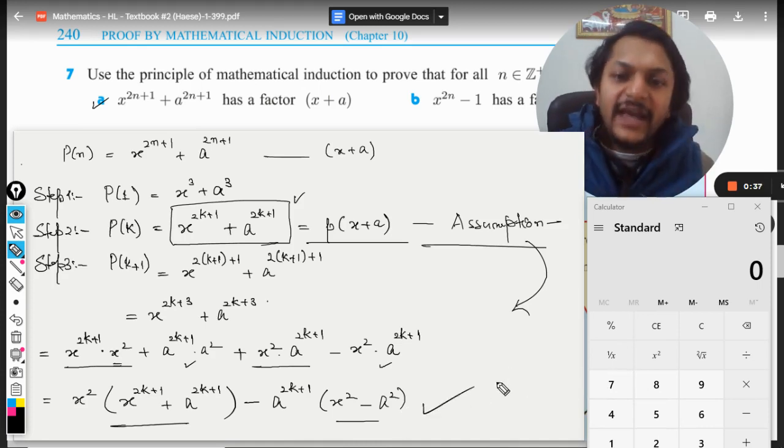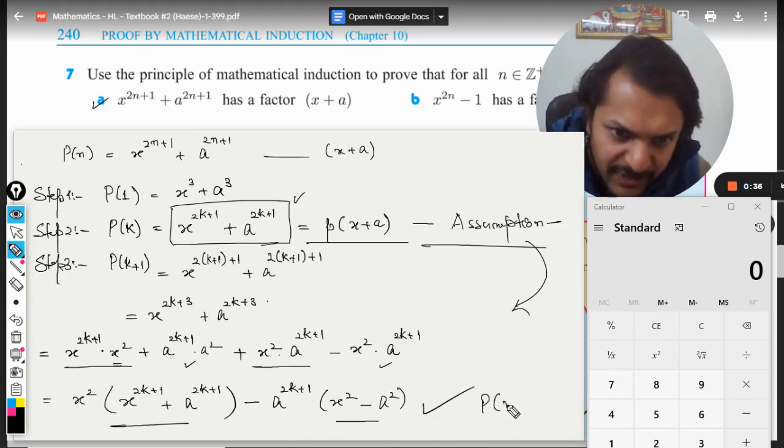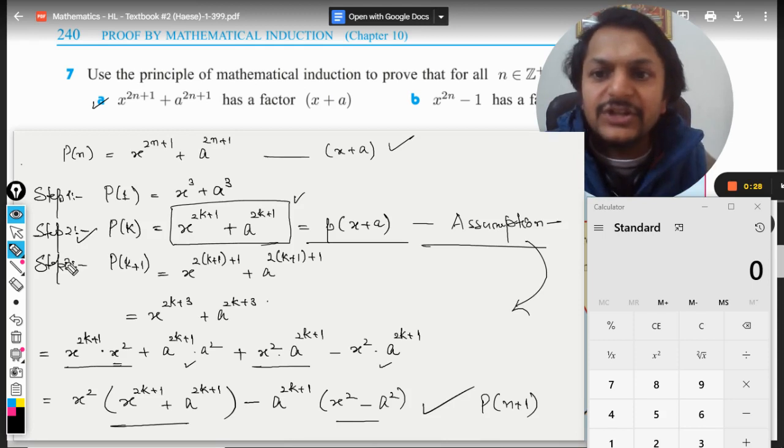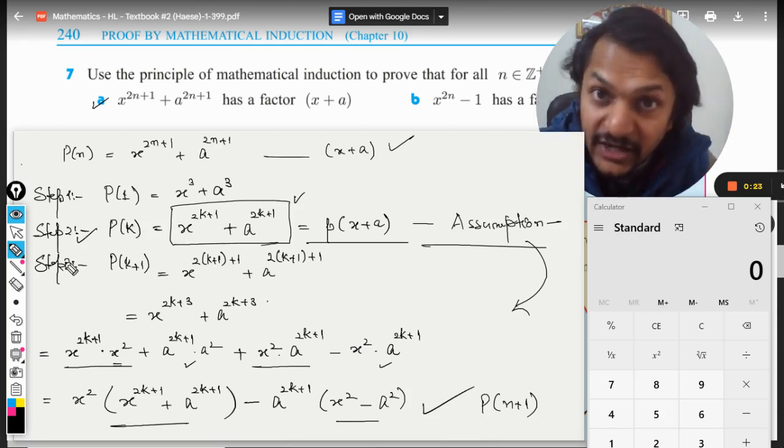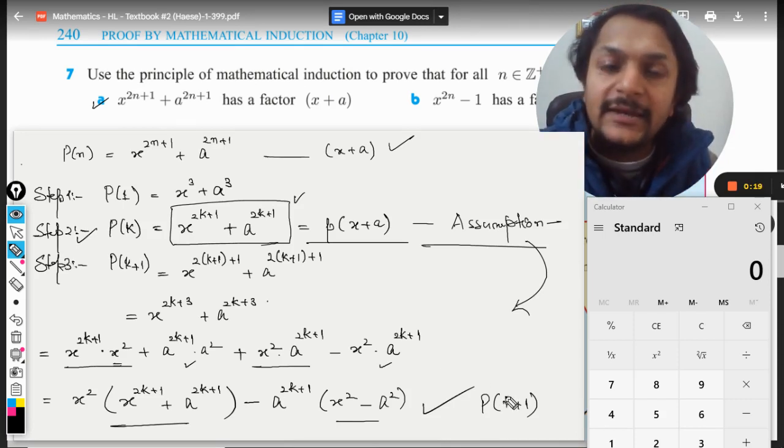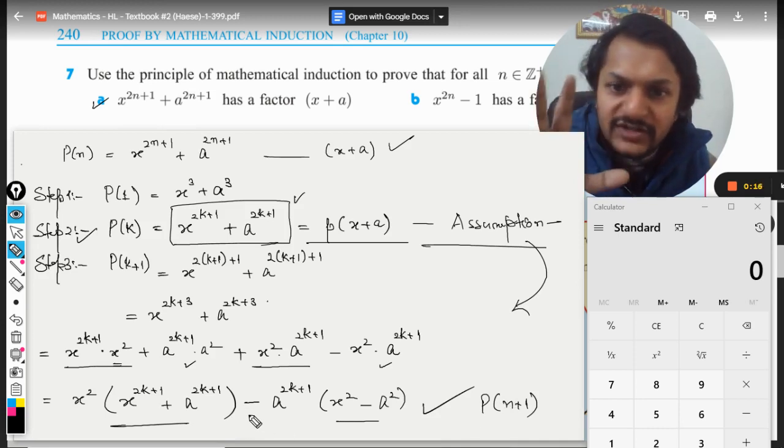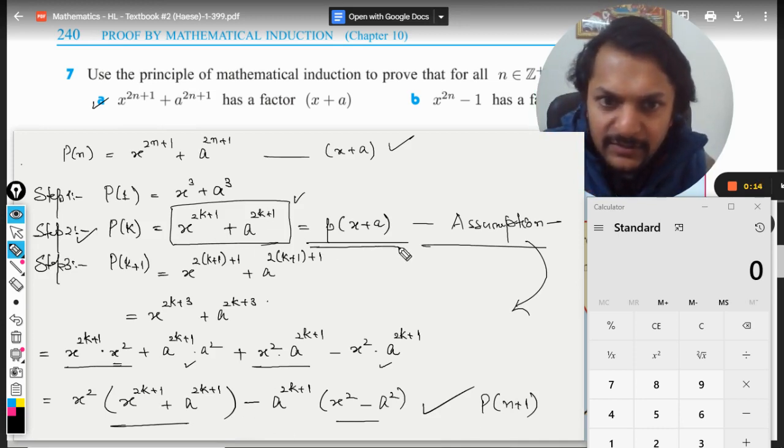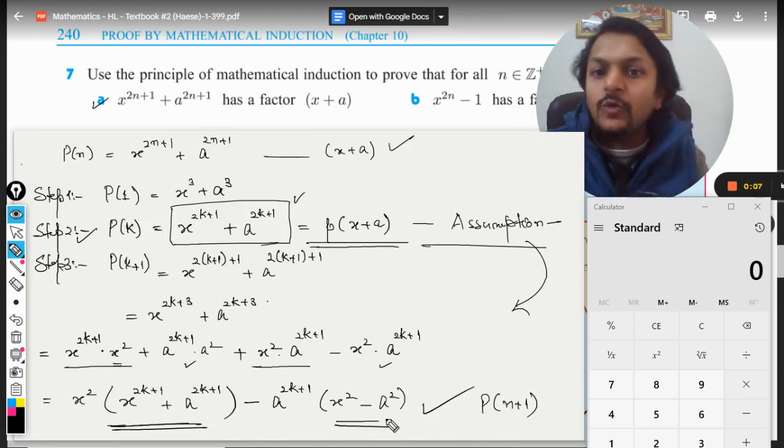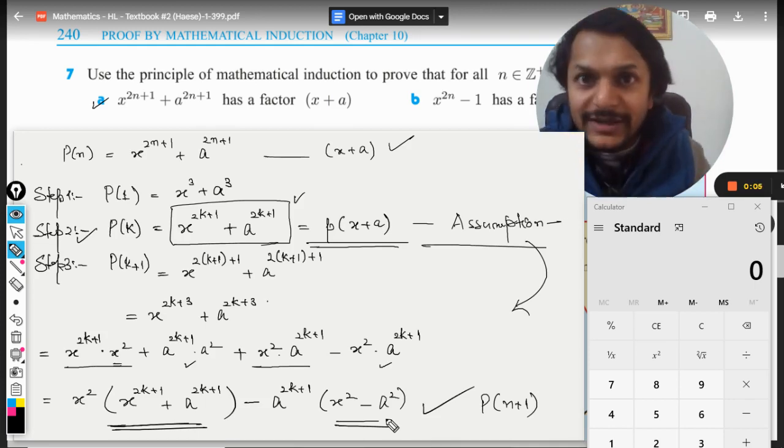Hence, this P(n+1) is divisible by x+a if this assumption in step number two is taken. If we assume that the statement is correct for n equal to k, then the statement will be true for n+1 also. This thing is divisible by x+a, and this can be divided into x+a. This is how we do this question. All the best, bye.